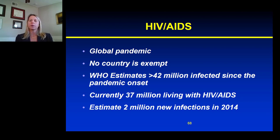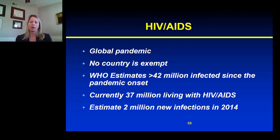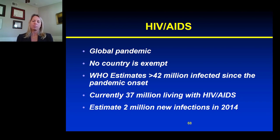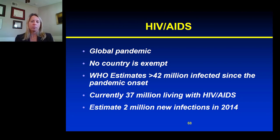I want to discuss briefly HIV-AIDS as an example of a global pandemic. As we all know, HIV-AIDS has been around since the 1980s, and it has affected humans in all regions of the world, such that no country is exempt from infection. By definition, in the beginning it met the definition of a pandemic because of its geographic spread, the newness to the human population, and its high level of virulence.